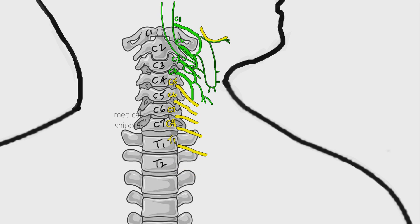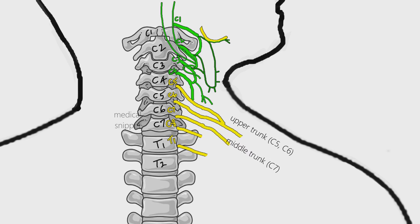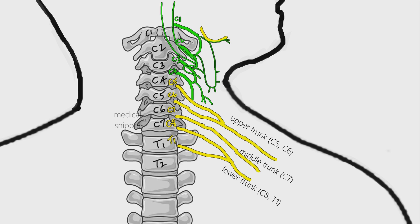Trunks are formed by the union of the C5 to T1 roots. There are three trunks. The upper trunk is formed by the union of C5 and C6 root. The middle trunk is continuation of C7 root. And the lower trunk is formed by the union of C8 and T1 roots. The trunks pass downwards and laterally to the outer border of the first rib.